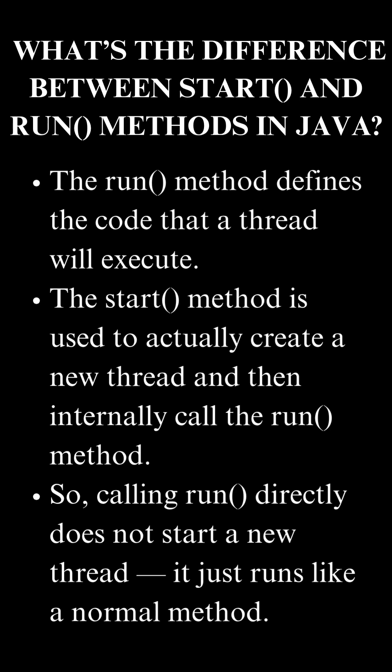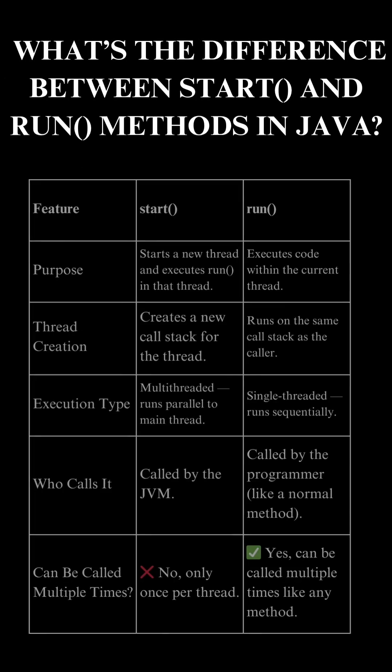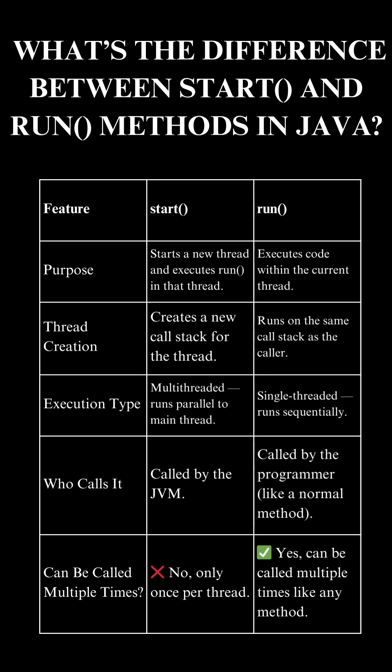Now let's go through the comparison table. The start method starts a new thread and executes the run method in that thread, whereas the run method executes the code within the current thread. The start method creates a new call stack for the thread, whereas the run method runs on the same call stack as the caller. The start method is multi-threaded, meaning it runs parallel to the main thread.